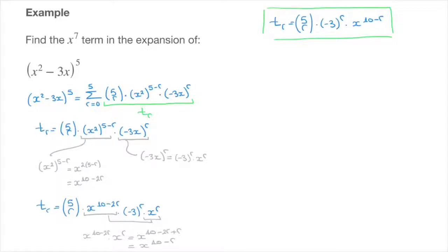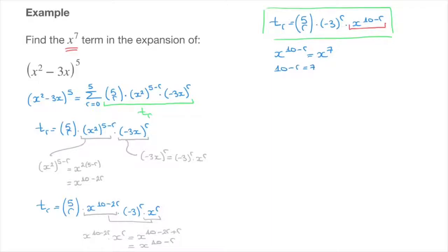Now we find the value of r for which this general term corresponds to the x to the power of 7 term. We need x to the power of 10 minus r to equal x to the power of 7. Since both sides are powers of the same base x, we solve 10 minus r equals 7. Subtracting 10 from each side gives negative r equals negative 3, so r equals 3.